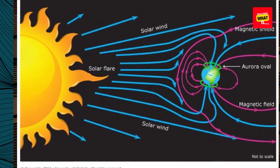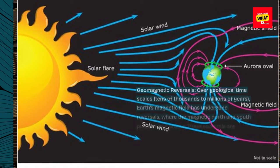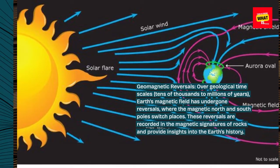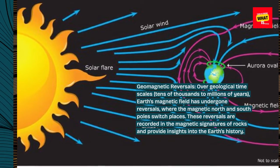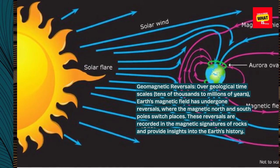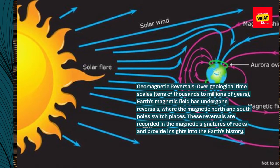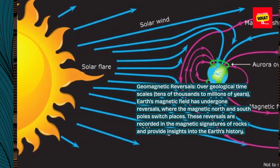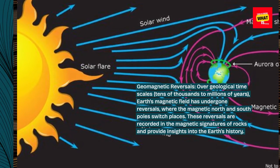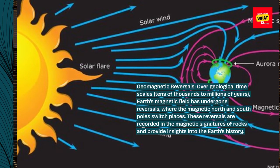Geomagnetic Reversals: Over geological timescales, tens of thousands to millions of years, Earth's magnetic field has undergone reversals where the magnetic north and south poles switch places. These reversals are recorded in the magnetic signatures of rocks and provide insights into the Earth's history.